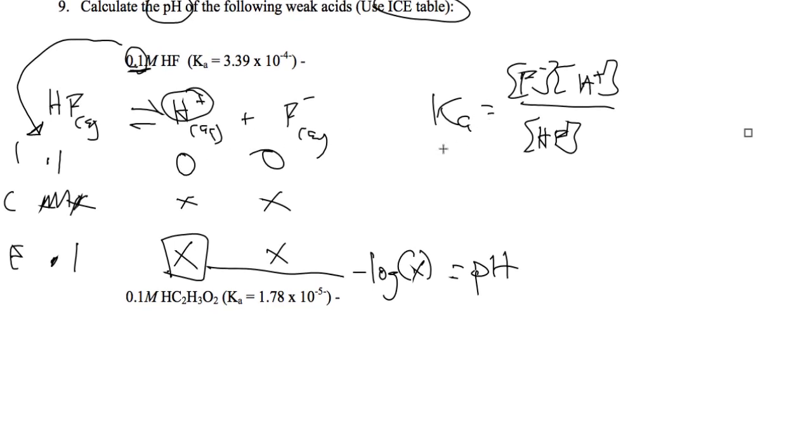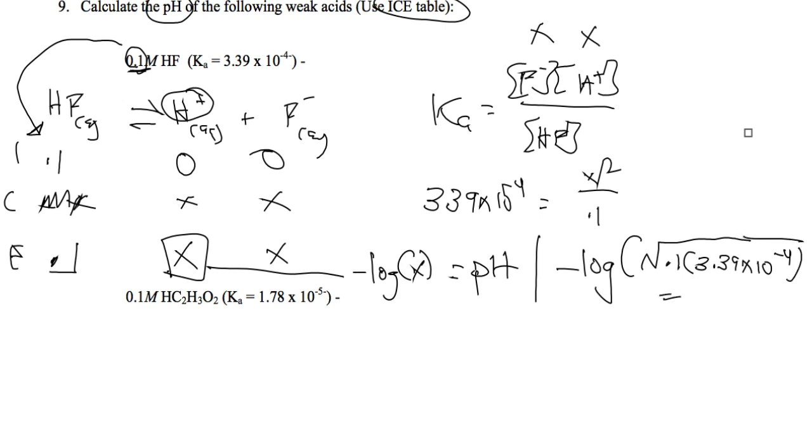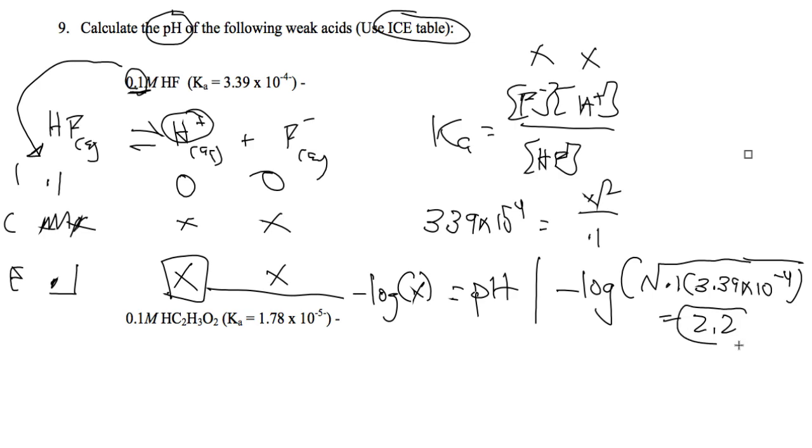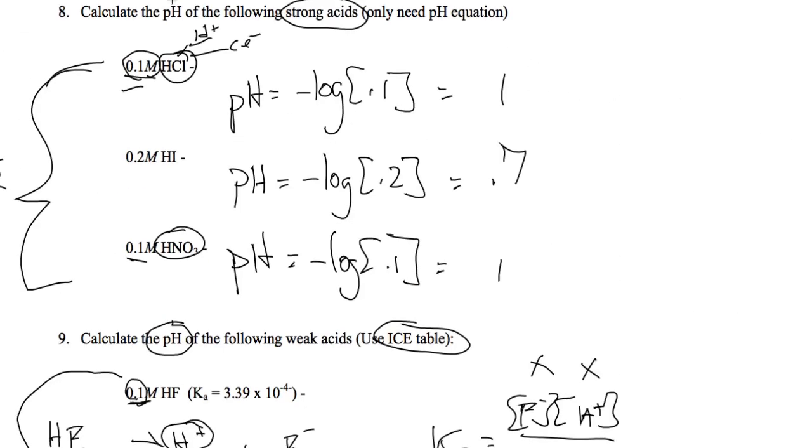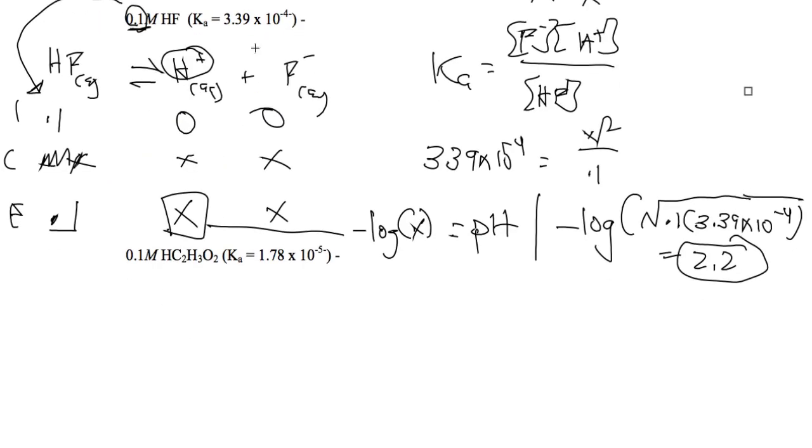So here's how we're going to go about doing it. We're going to plug these into the Ka expression. They gave us Ka, 3.39 times 10 to the minus 4th, and if we plug X in here and X in here, we get X squared over HF, which is 0.1 in equilibrium. And if we rearrange this for X and take the negative log of it, we get the negative log of the square root of 0.1 multiplied by 3.39 times 10 to the minus 4th, and the pH here is going to be around 2.2. Fairly acidic, but not as acidic as these because they were strong acids, and this is a weak acid.